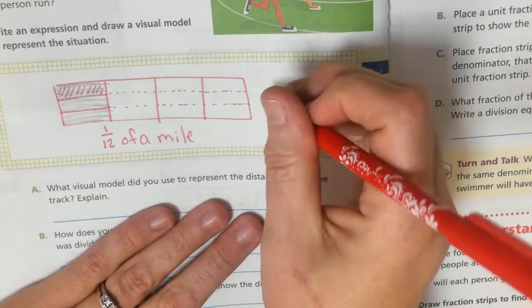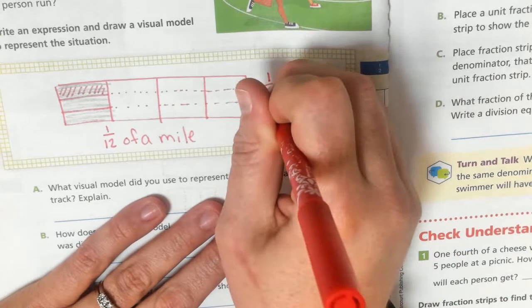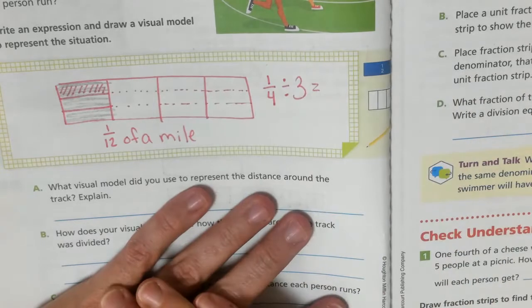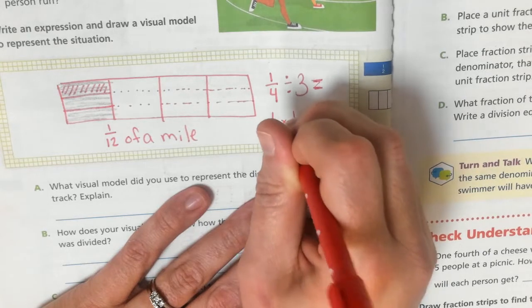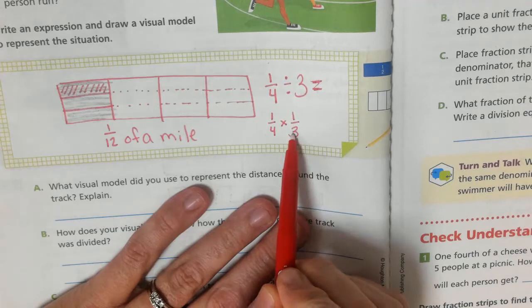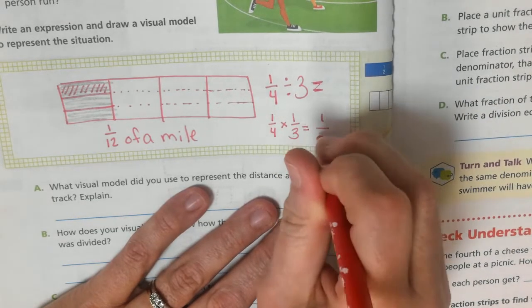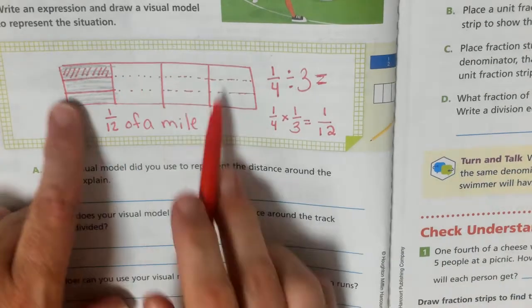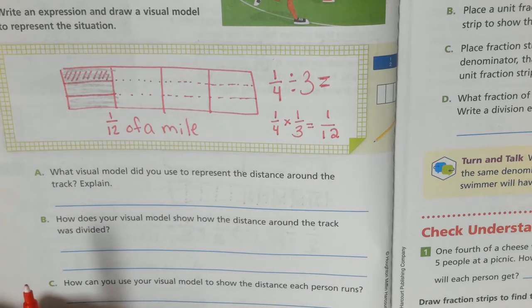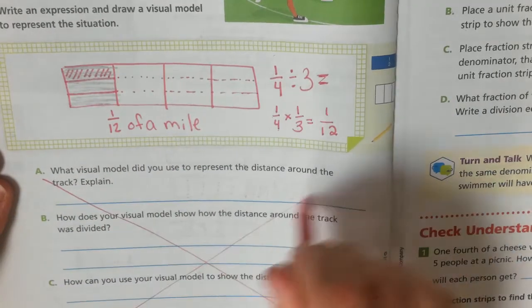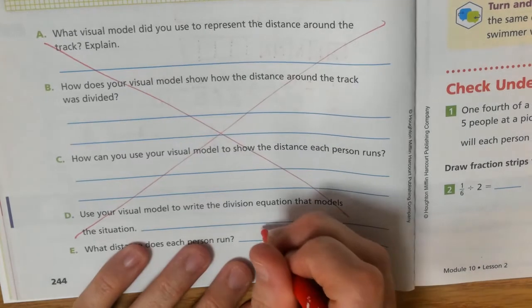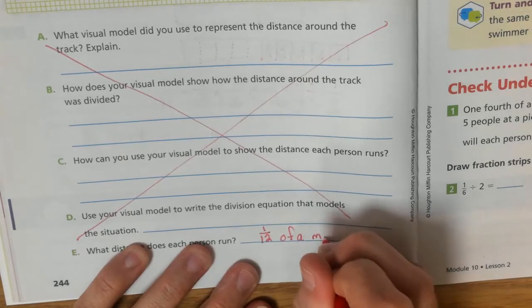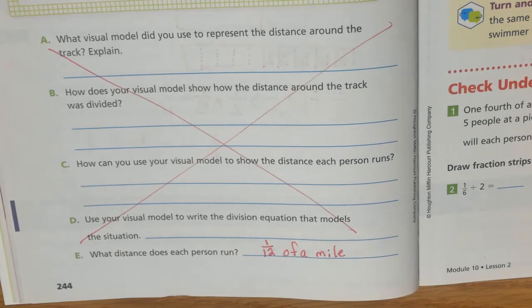To show this with the math piece of it, we would be saying it is one fourth divided by three. In order to do one fourth divided by three, we're going to do one fourth times one third. Remember we take our three over one and inverse it. That would be one twelfth. You can see that from the picture and then you can see it when you do the math. Each person runs one twelfth of a mile. Let's try another one.